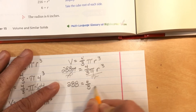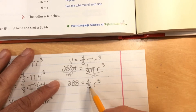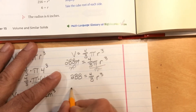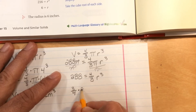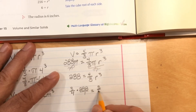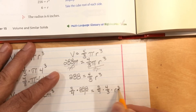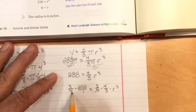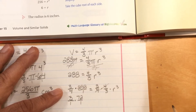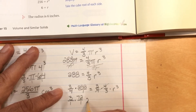To get rid of the four-thirds fraction, multiply both sides by its reciprocal, three over four. Three over four times four over three r cubed gives one, so those cancel. On the other side, four goes into 288 to simplify: we get three over one times 72 over one, which equals 216.